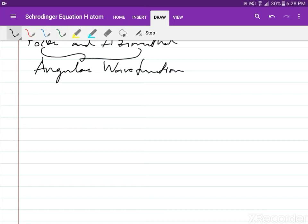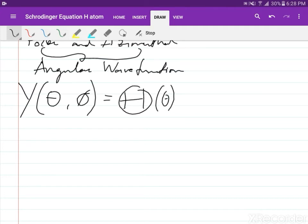Recall that we have our angular wave function Y of theta and phi equal to capital theta of small theta times capital phi of small phi.